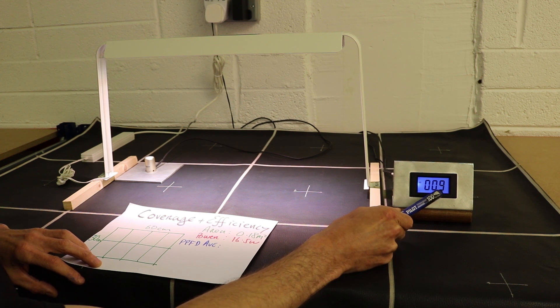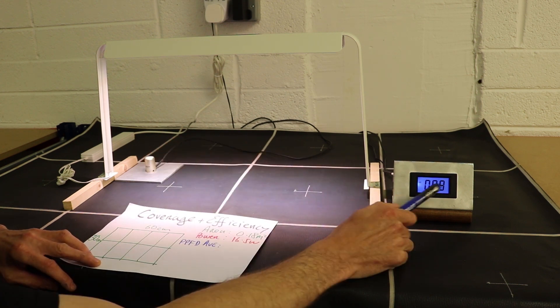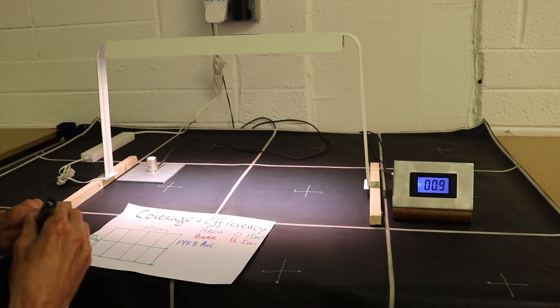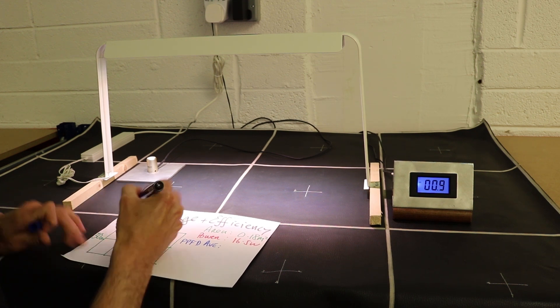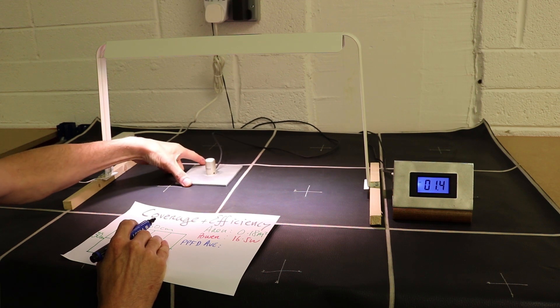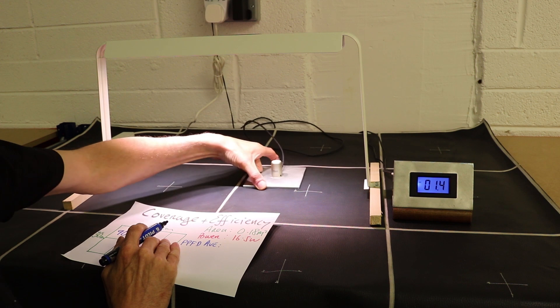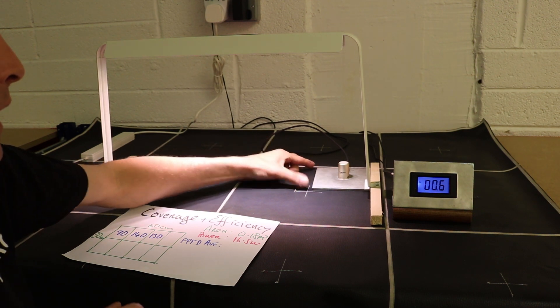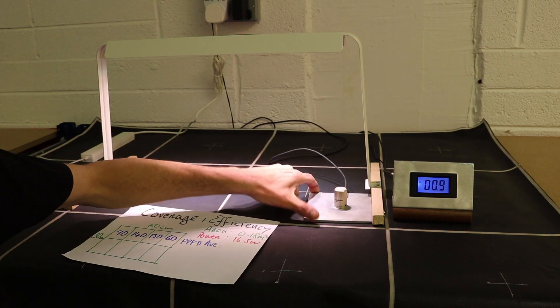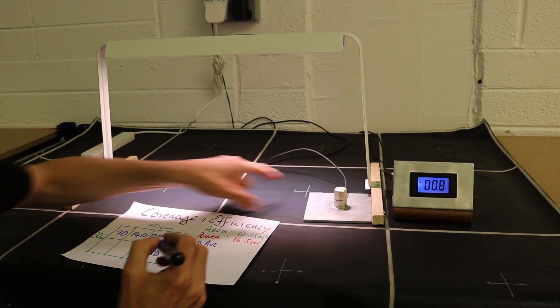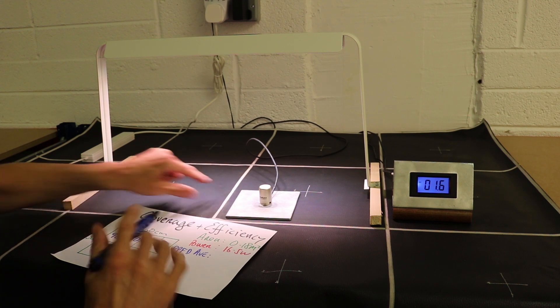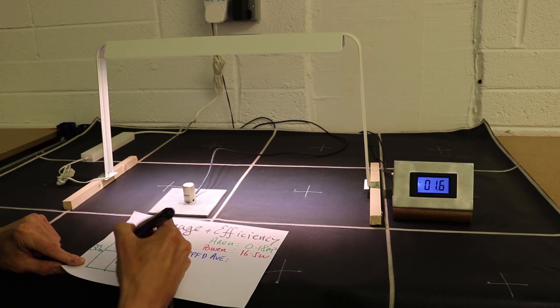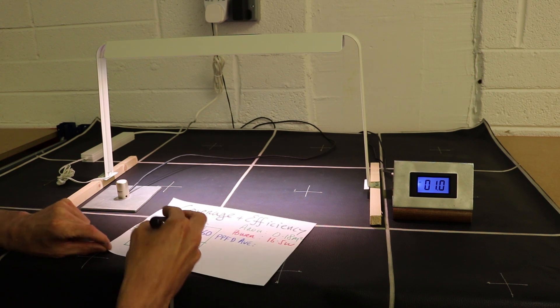This is the readout of the SQ500, the PPFD meter. It's measured in tens of units. The readings from each square are: 90, 140, 130, 60, 80, 160, 160, and 100.